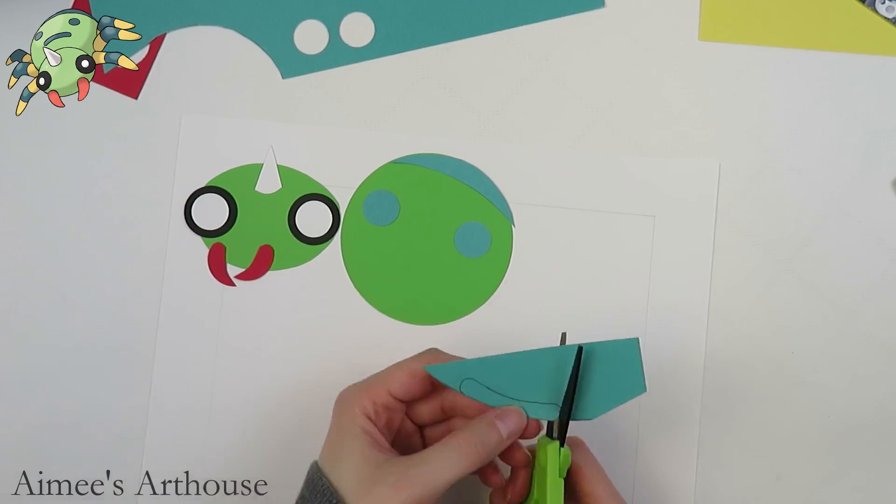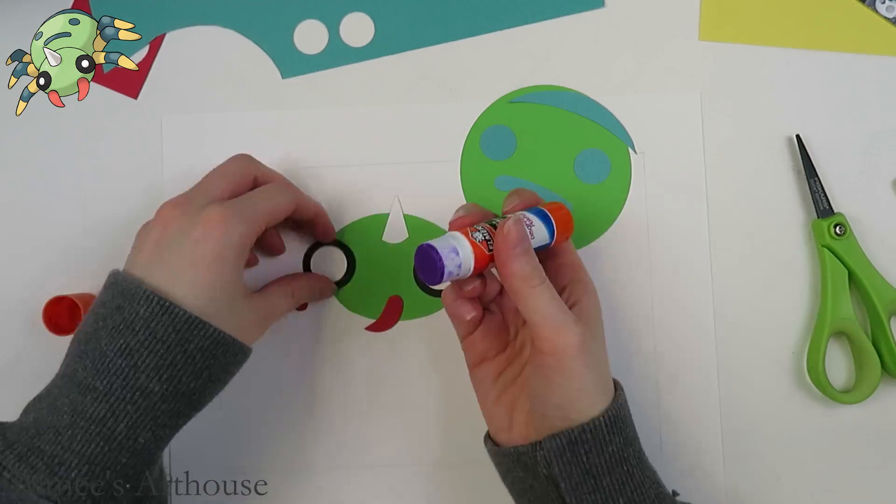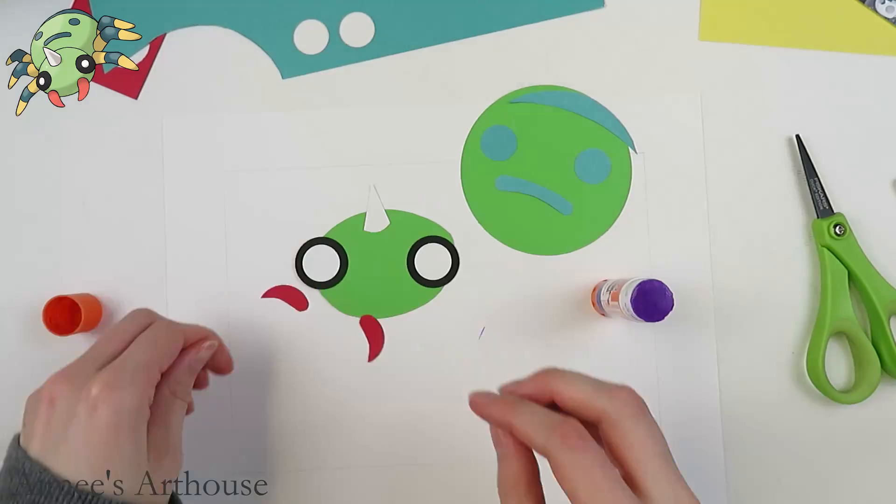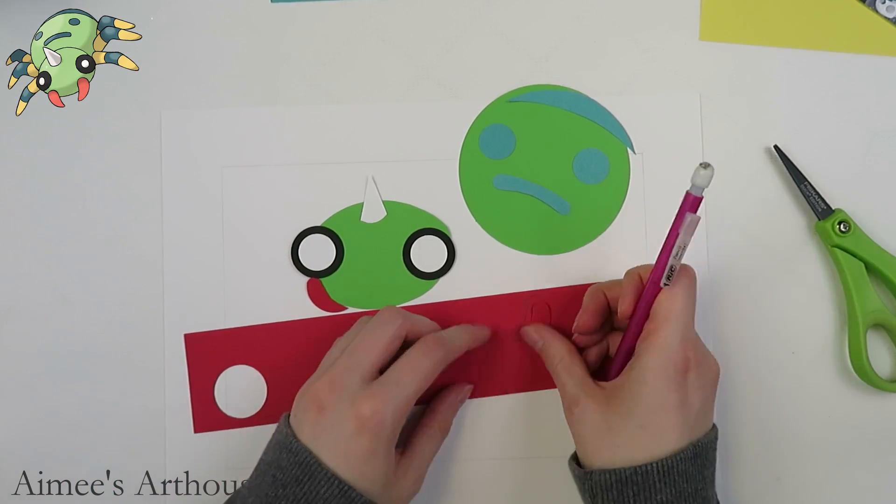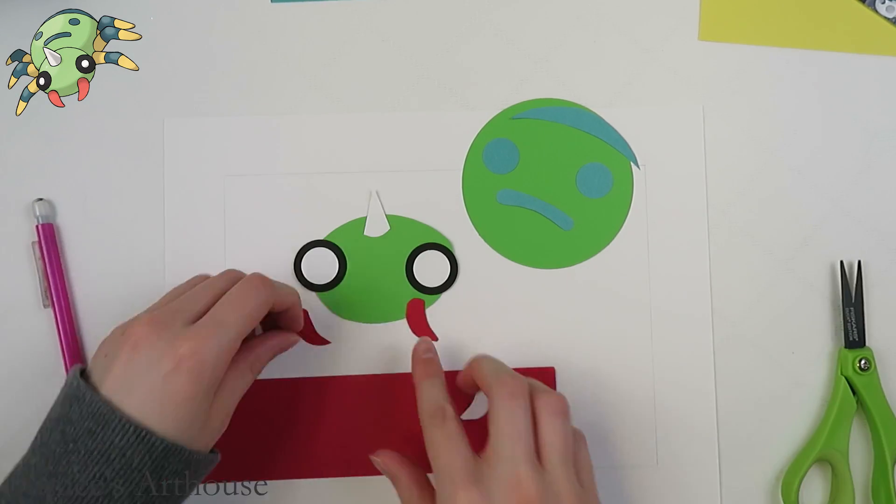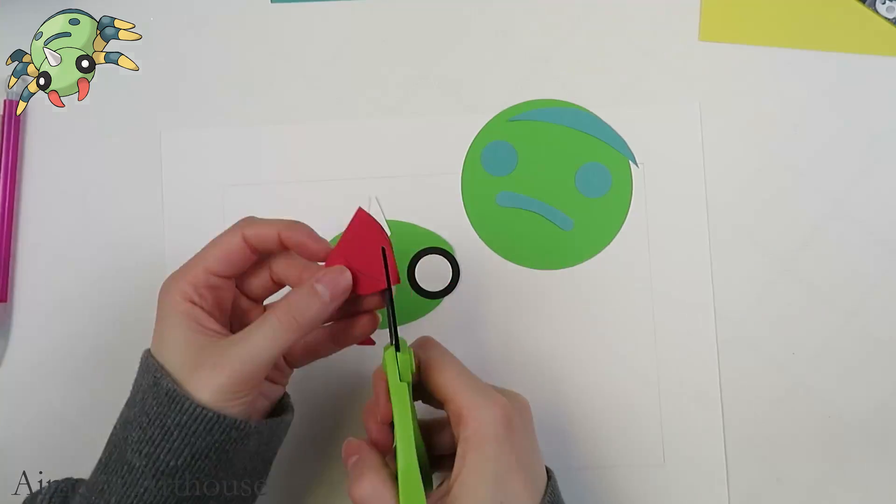So you can see I have hole punches to make several different sizes of circles for Spinarak, including his main body, his eyes, and the little spots on his back. And the rest I am tracing and cutting by hand for like the pinchers, the horn, and the other markings on his back.